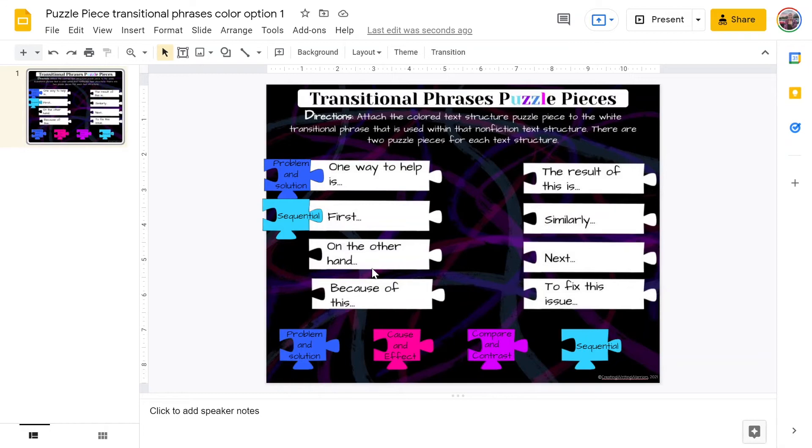Below first, we see on the other hand. A writer would have given information about one idea, and now they are going to talk about an opposite idea on the other hand. That would be a compare and contrast text structure. So students would go grab this purple puzzle piece, pull it up, and then if they want to be more accurate, they can press the shift key and arrow keys and line it up.